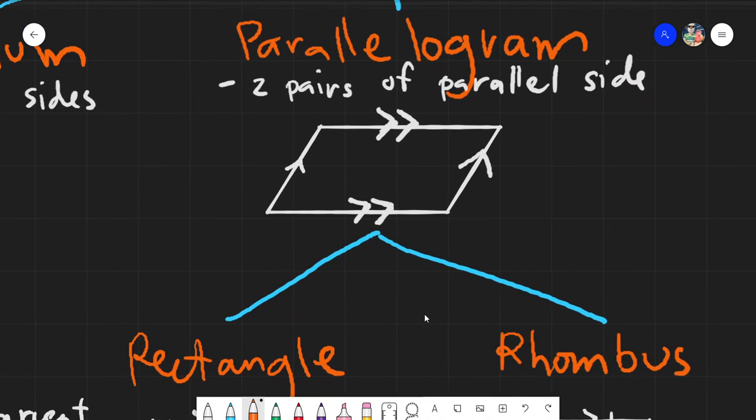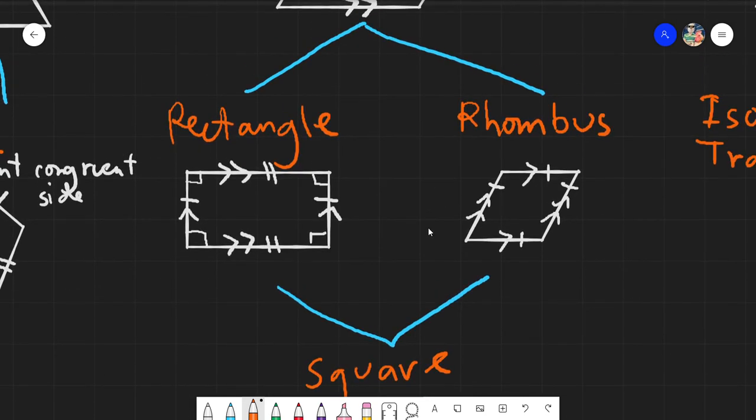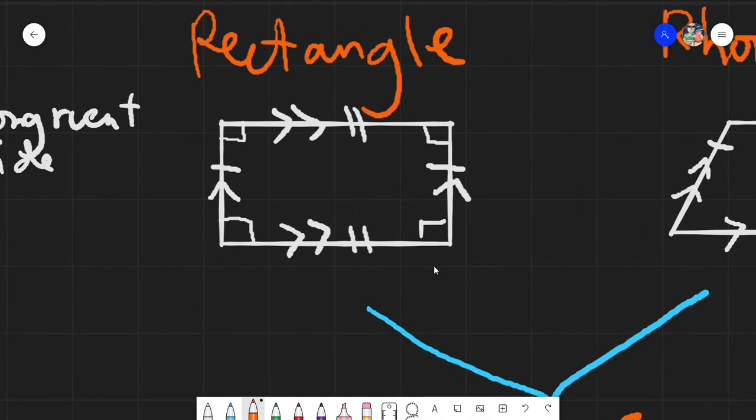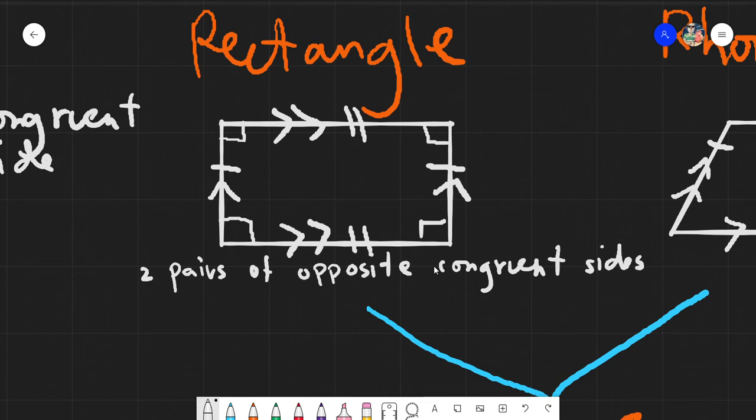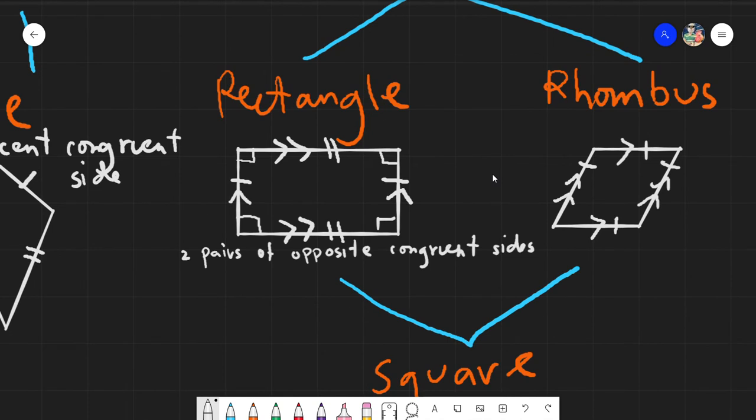The next one, under parallelogram, we see here, we have the rhombus and rectangle. So ang rectangle, guys, would be a figure that has two pairs of opposite and congruent sides. Two pairs of opposite and congruent sides. And having the same property of the parent, which is parallelogram, it will also have two pairs of parallel sides. Meaning, itong opposite sides na yung congruent, this one, kung this is 6, this is also 6. And this is 12, this is also 12. Yung opposite sides yung congruent, hindi ho yung magkatabi.